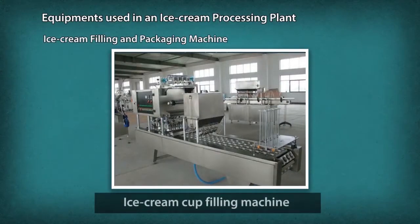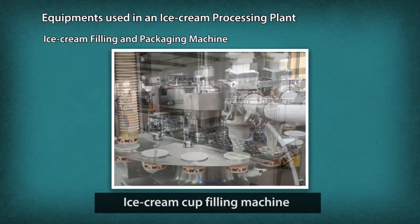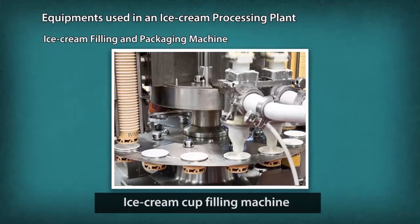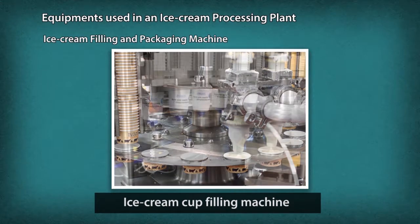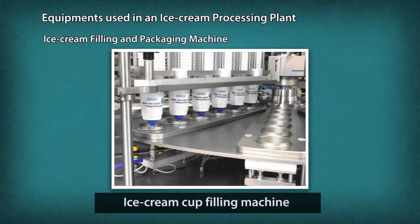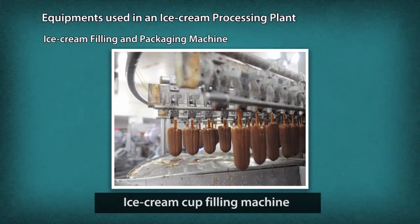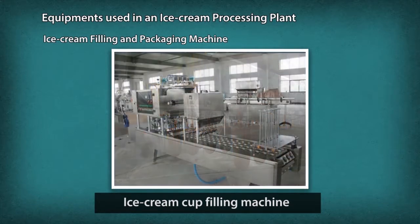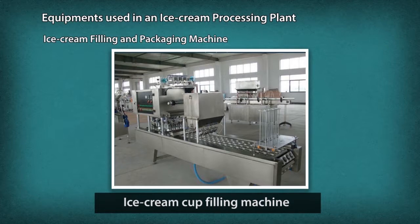Ice Cream Packaging Machine: Most ice cream processing plants use an automated mechanism process line for the pouring, filling and cutting of ice creams into cups, cones, containers and candy sticks. These machines are ideal equipment for packing free-flowing type food products.